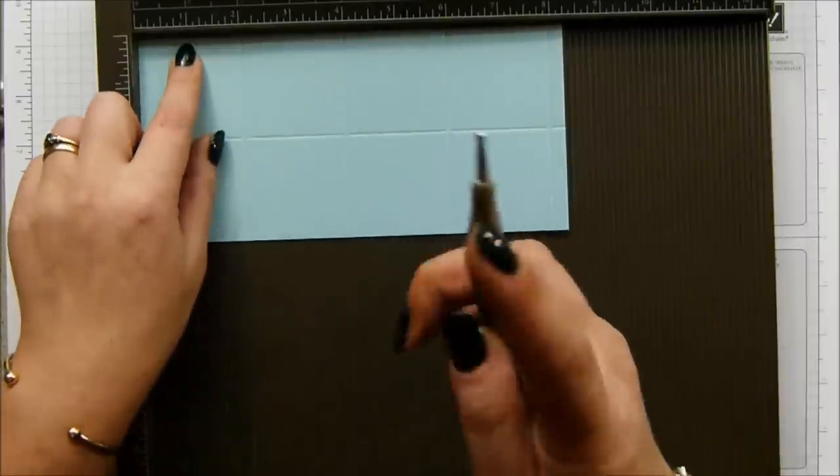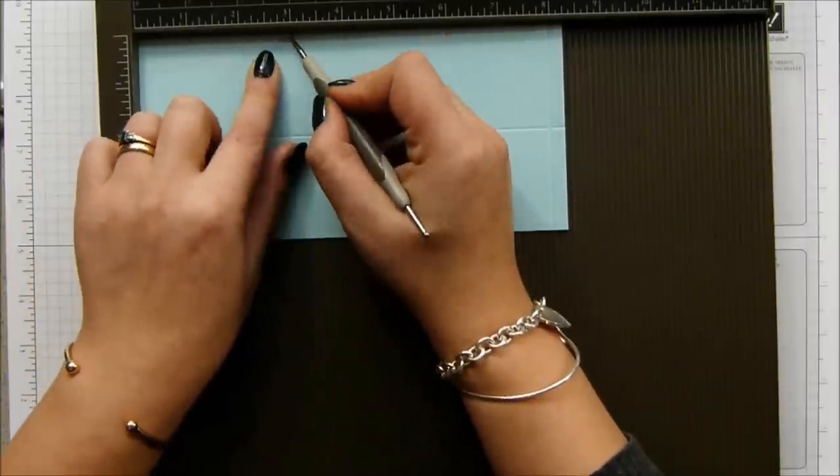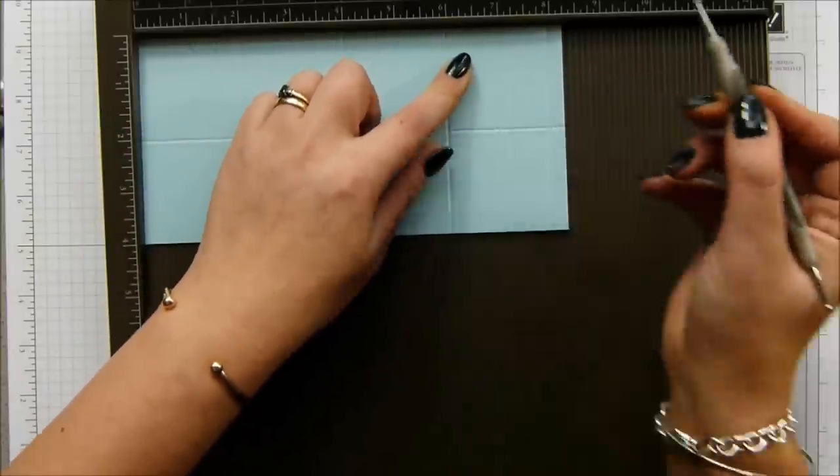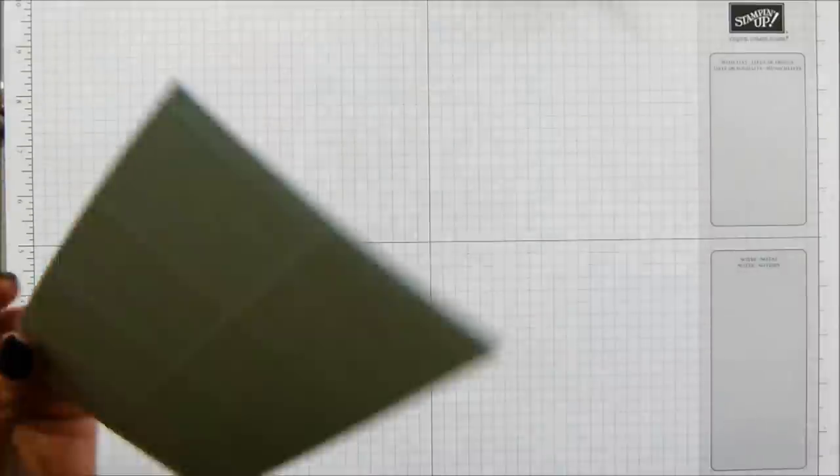And then you make a mark at the odds. So at one, three, five and seven, which is two and a half, seven and a half, twelve and a half and seventeen and a half centimeters.